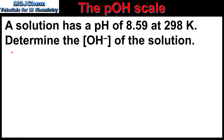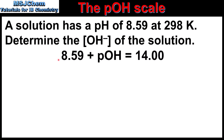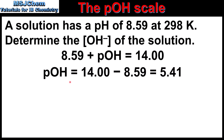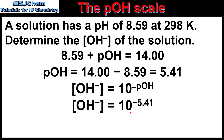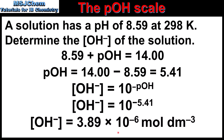In our final example, we're told that a solution has a pH of 8.59 at 298 K, and we'll determine the concentration of hydroxide ions. So 8.59 plus POH equals 14, and POH equals 14 minus 8.59, which gives us 5.41. Next, to find the concentration of hydroxide ions: it's 10 to the minus POH value, which is 10 to the minus 5.41. This gives us a hydroxide ion concentration of 3.89 × 10⁻⁶ mol dm⁻³.